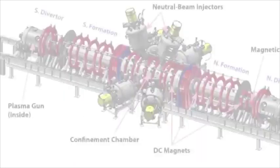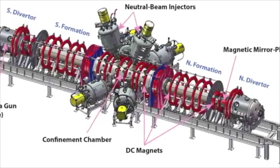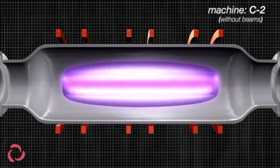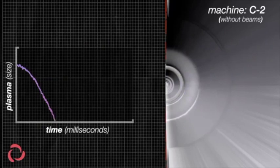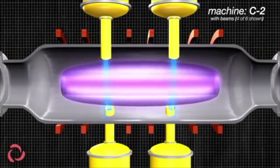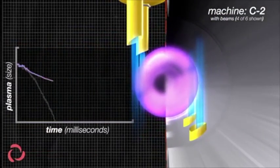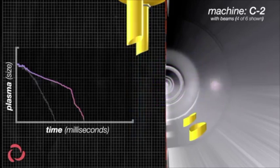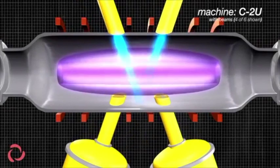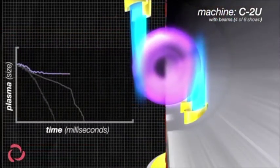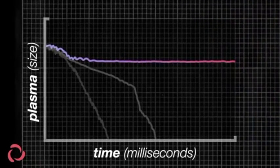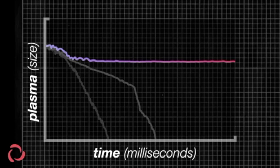TriAlpha's machine is as long as two buses. It creates smoke rings of gas and then slams them together at nearly a million kilometers per hour, creating a hollow blob of gas at around 10 million degrees Celsius. In early experiments, the gas fell apart after just a couple thousandths of a second, but firing beams of high-energy particles helps keep it together. This week, the company announced that using more powerful angled beams keeps the gas tube stable much longer. Next, the team will build a bigger, even more powerful version to reach the enormous temperatures needed for fusion.